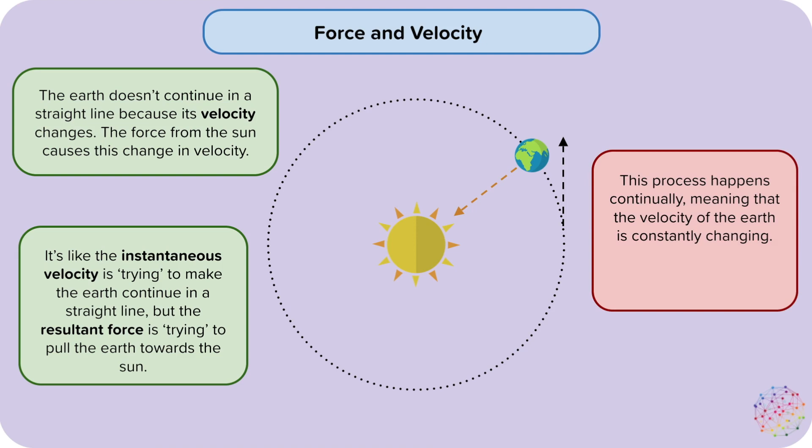This process happens continually, meaning that the velocity of the Earth is constantly changing. This means the Earth is orbiting the Sun.